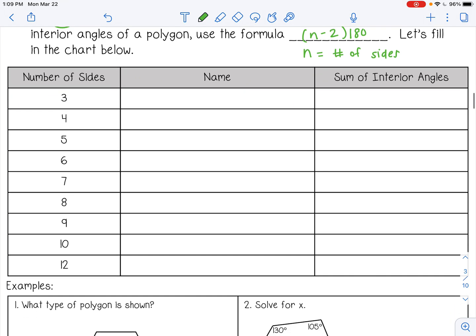Alright, so the first type is a polygon with three sides, and that's called a triangle. Alright, so we're going to use n minus 2 times 180. A polygon has three sides, so 3 minus 2 times 180, which gives us 180 degrees. So every triangle has 180 degrees inside. If we add up all three angles, they always add to equal 180. Alright, number four is a quadrilateral. Has four sides, so 4 minus 2 times 180, which is 360.